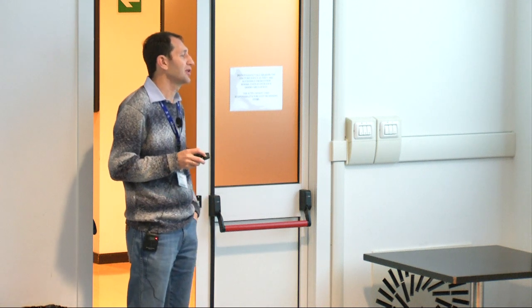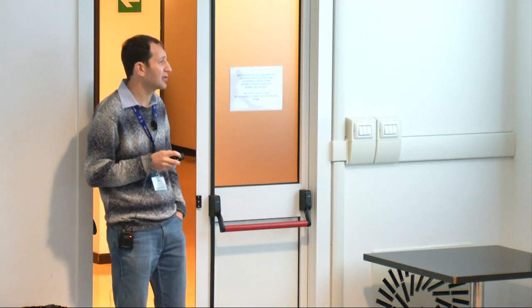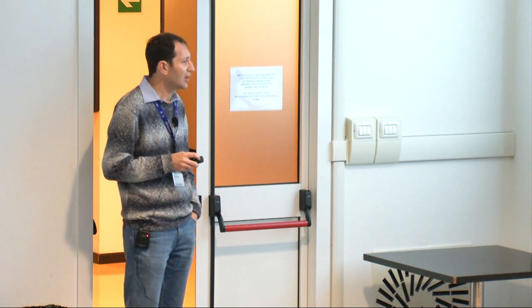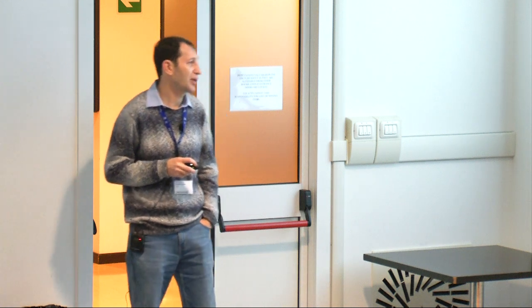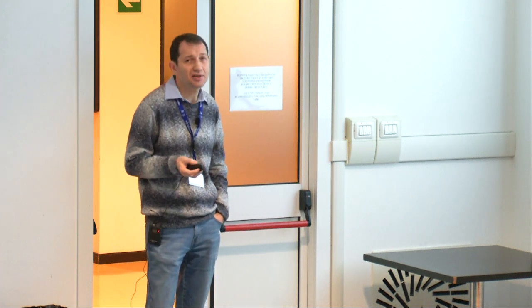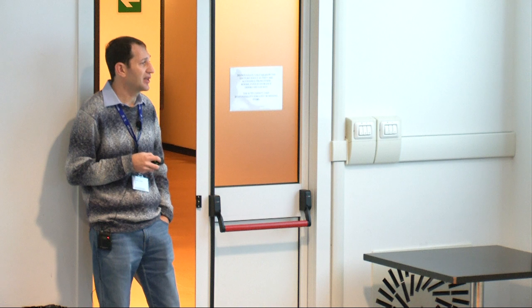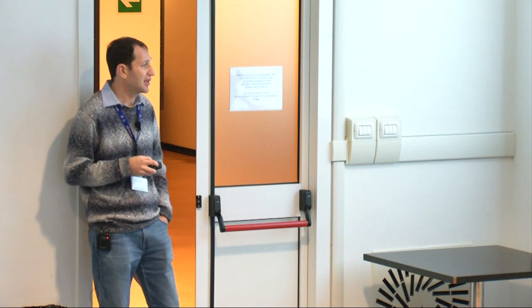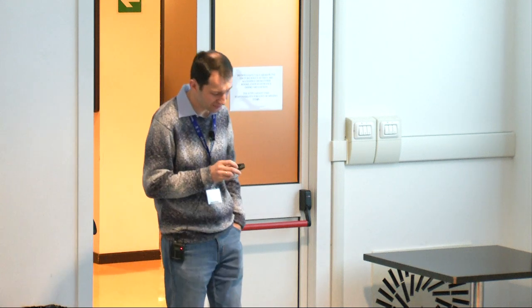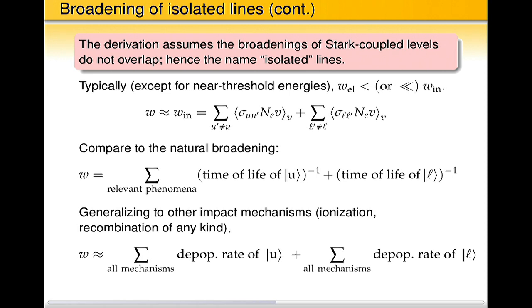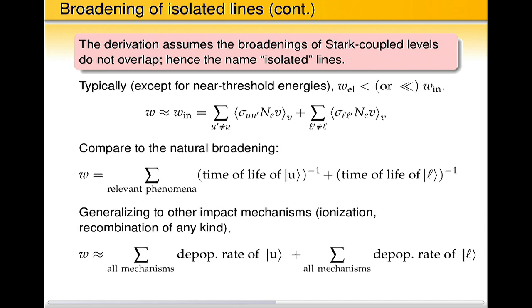So it's just sum of inverse values of time of life of upper and lower levels, the inelastic part. In principle one can generalize it to other impact processes like ionization, recombination, et cetera. So the width is just the inelastic part, sum of the population rates of upper and the population rates of the lower levels.